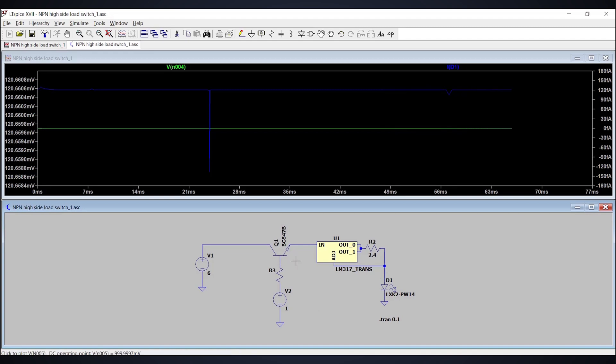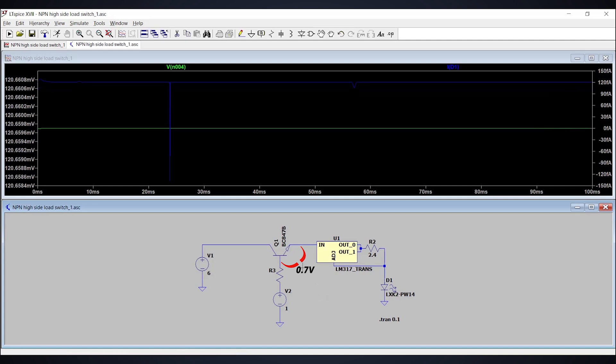We surely gave the base voltage but to turn on an NPN BJT, we need to give the voltage of 0.7 volts between base and emitter. The potential difference between base and emitter should be at least 0.7 volts.